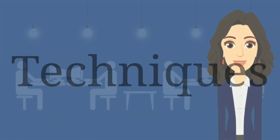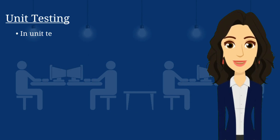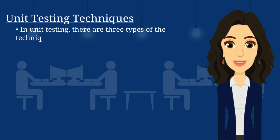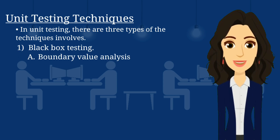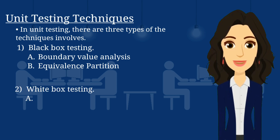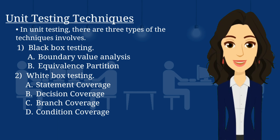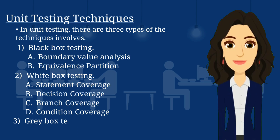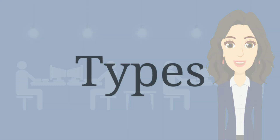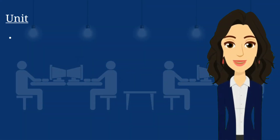Unit Testing Techniques: In unit testing, there are three types of techniques involved. 1. Black Box Testing: A. Boundary Value Analysis, B. Equivalence Partition. 2. White Box Testing: A. Statement Coverage, B. Decision Coverage, C. Branch Coverage, D. Condition Coverage. 3. Gray Box Testing.